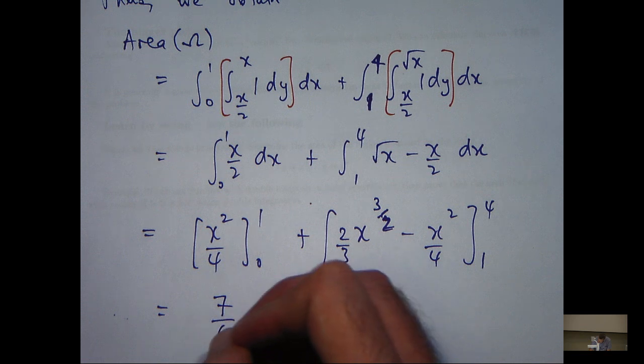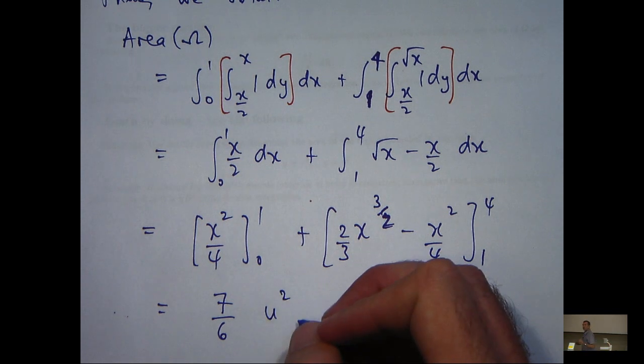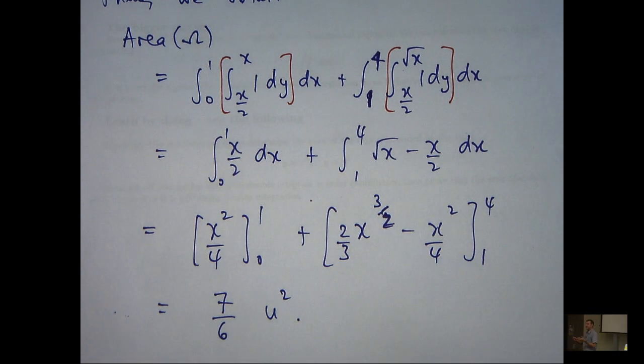And then it's just a matter of substituting in the values and cleaning up a bit. And we'll get an answer of 7 sixths. Now remember, we are calculating area here, so I'm going to put it in square units.